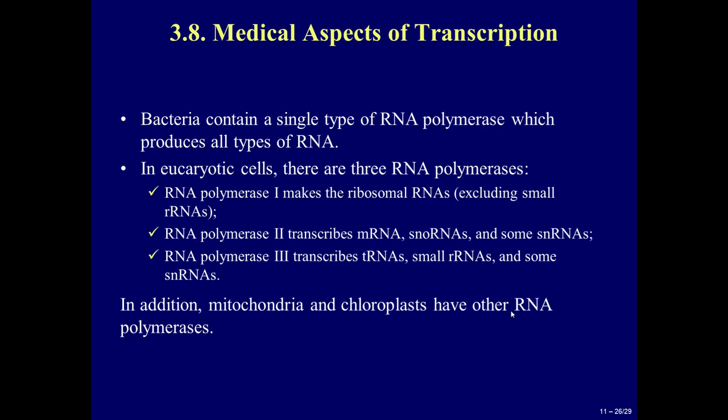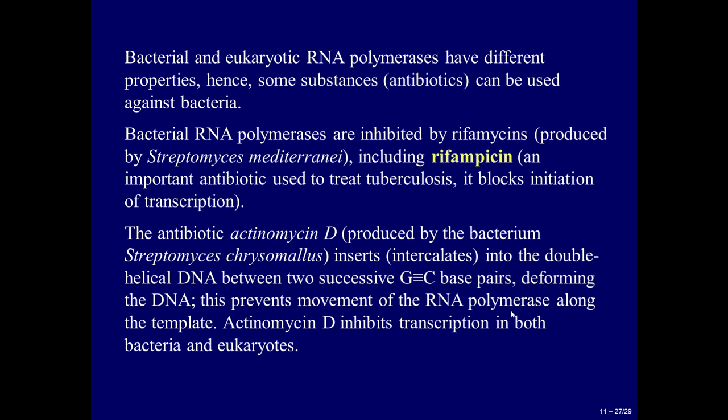Question 3.8: Medical aspects of transcription. Bacteria contain a single type of RNA polymerase, which produces all types of RNA. In eukaryotic cells, there are three RNA polymerases: RNA polymerase I makes the ribosomal RNAs (excluding small rRNAs); RNA polymerase II transcribes mRNA, snoRNAs and some snRNAs. In addition, mitochondria and chloroplasts have other RNA polymerases. Because bacterial and eukaryotic RNA polymerases have different properties, some substances — antibiotics — can be used specifically against bacteria.